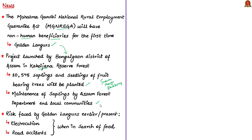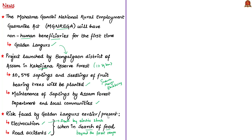Planting fruit-bearing trees will ensure that the golden langurs residing in the 17 square kilometer Kakujiana reserve forest do not have to risk their lives to find food. Several golden langurs have died due to electrocution and road accidents while looking for food beyond the reserve forest range. Electrocution refers to death by electric shock — farmers have electric fences on the fringes of the forest to protect their agricultural fields, and golden langurs die when they cross into these areas. This project has been appreciated by wildlife activists, who also noted the action taken by the Bongaigaon district administration.